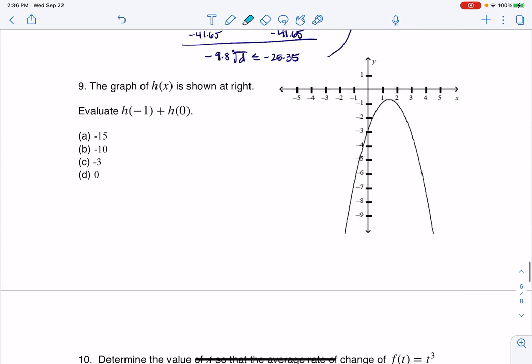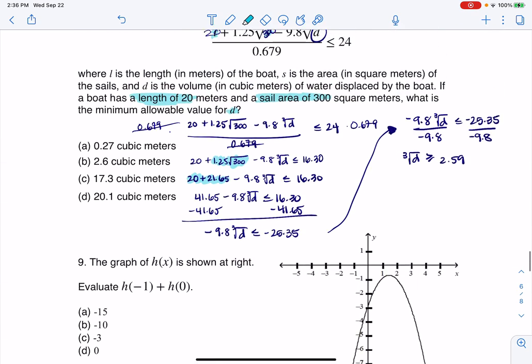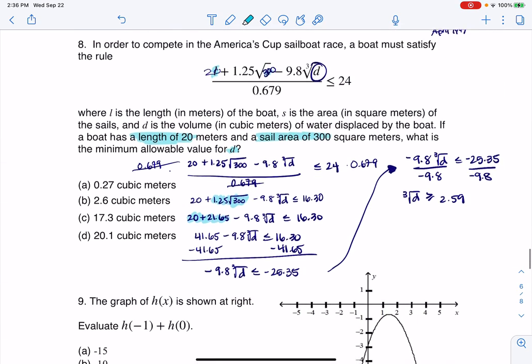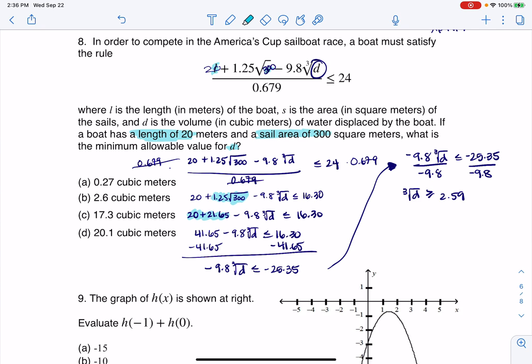Let me zoom back up. All right, so what I was trying to say is this was a less than or equal to, and when I divided by that negative 9.8 on both sides, it changed the direction of the inequality.